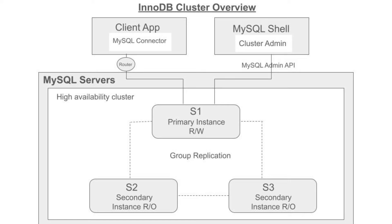A minimum of three instances is needed to function as an InnoDB cluster. Adding further instances increases the tolerance to failure of an InnoDB cluster. With three instances it can tolerate up to one failure. Each instance runs group replication to replicate data within the cluster, so any write operation to the primary instance will be replicated to all other member instances.